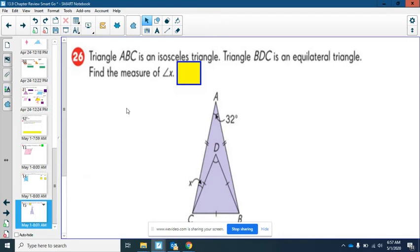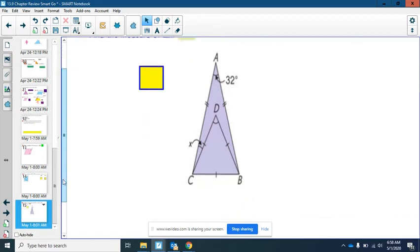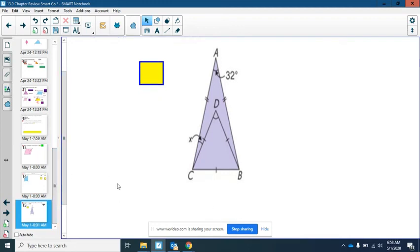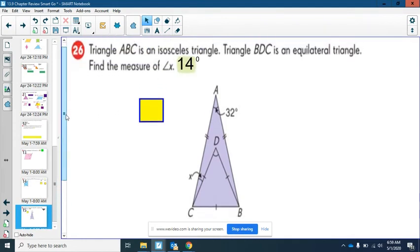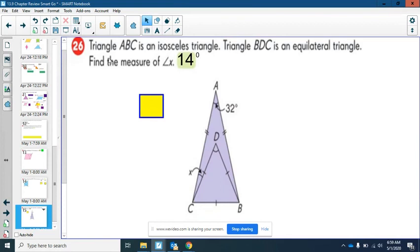We'll say $200 question. Isosceles triangle. Triangle ABC is an equilateral triangle. Find the measure of angle X. Pause it right here. And the answer. 14 degrees for angle X. A little bit of explanation. But it's an isosceles triangle. So start right there. There's your entry point.